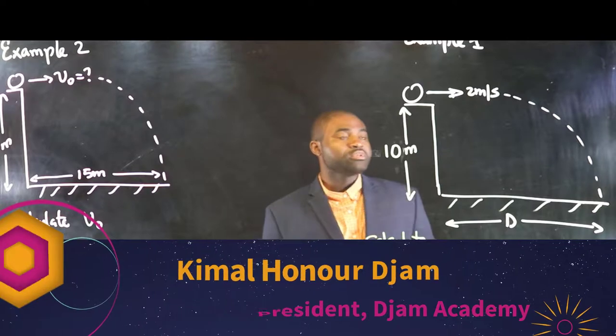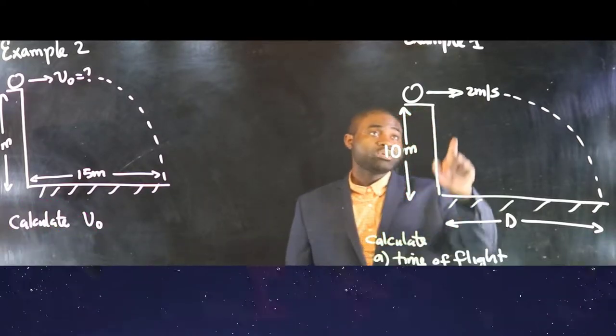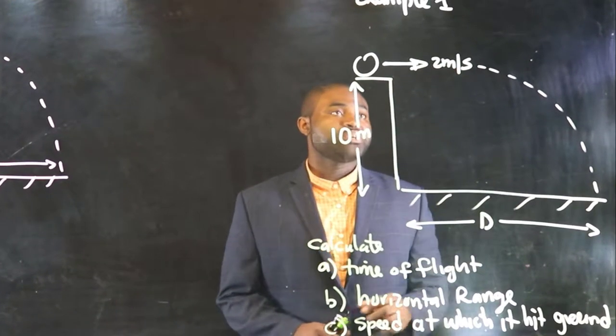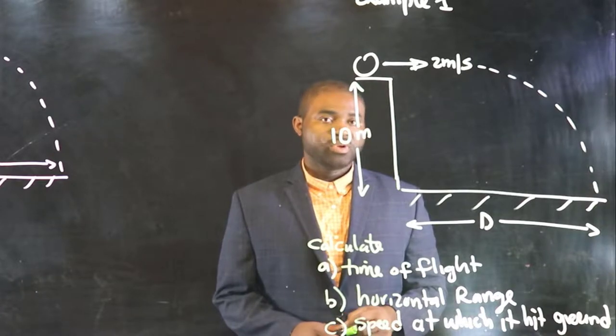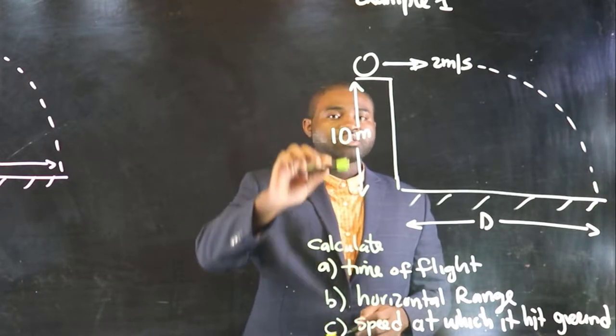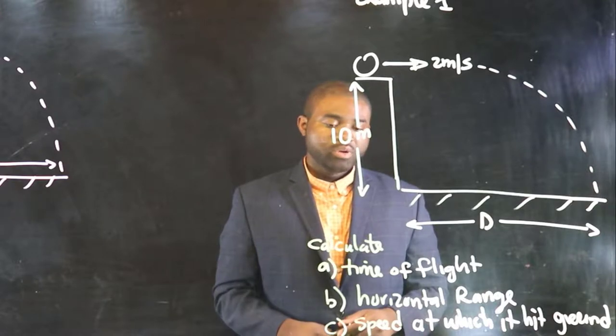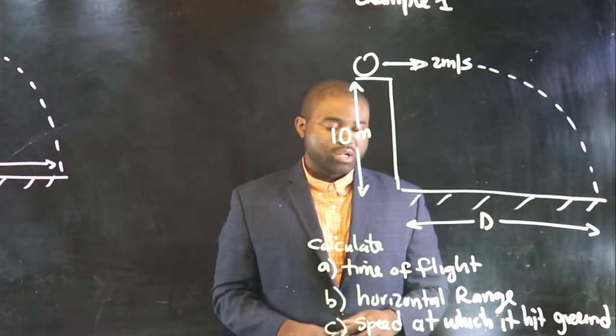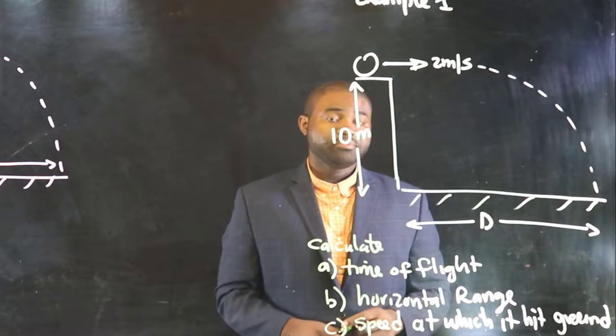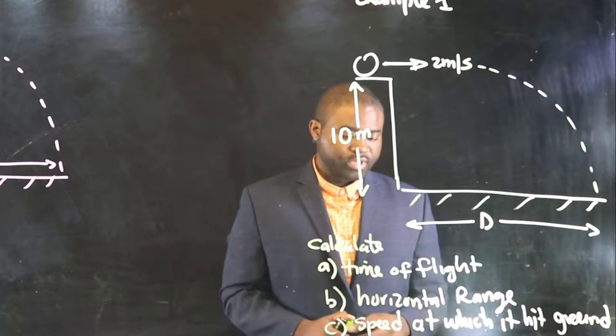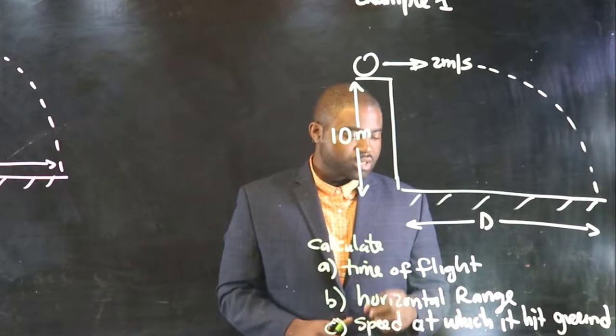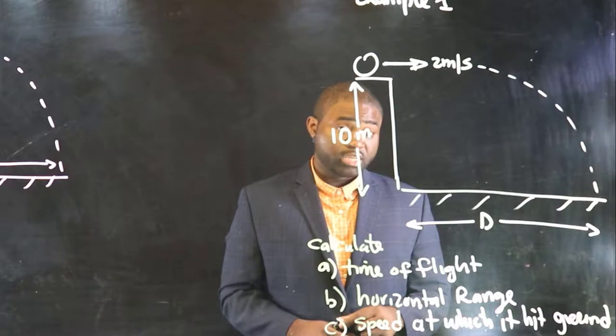In the first example, a ball is launched horizontally with a speed of 2 meters per second, from a height of 10 meters above the ground. We are required to calculate the time of flight, the horizontal range, and the speed with which it hits the ground.